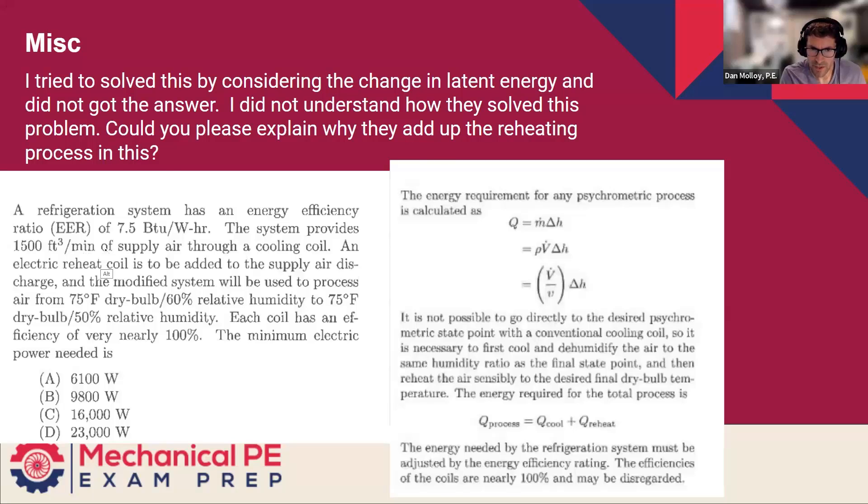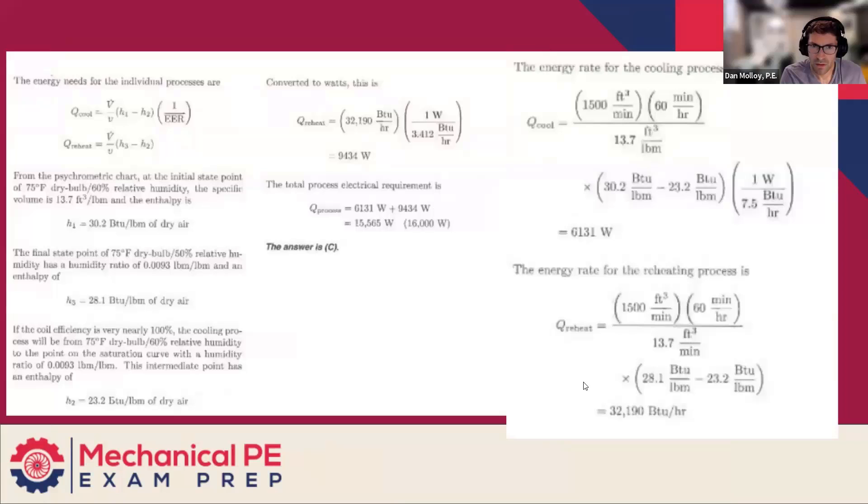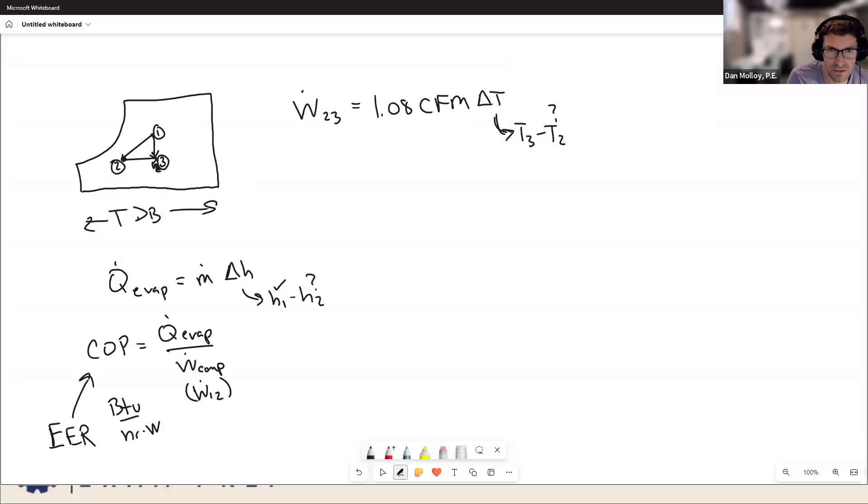So the only thing I'm missing is what are the conditions at state two? We know the CFM. Does the fact that we know the CFM do anything for us? Let's see what they did. First cool and dehumidify the air to the same humidity ratio as the final state point, and then reheat the air sensibly to the final dry bulb temperature. H1, H3. How'd they find H2? If the coil efficiency is very nearly 100%, the cooling process will be from 75, 60 to the point on the saturation curve with the humidity ratio of 0.0093. Ah! Okay, so they're assuming that this state two is all the way over here. All the way on the saturation curve. Move my two over there. Okay, so that's how they're saying this point is fully defined. So that gives us T2, that gives us H2, that allows us to find the amount of cooling that's being done.